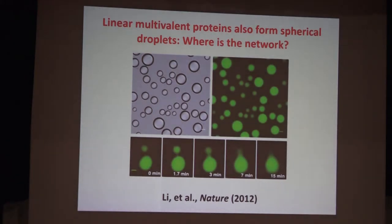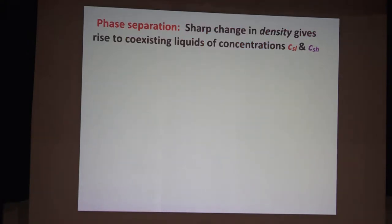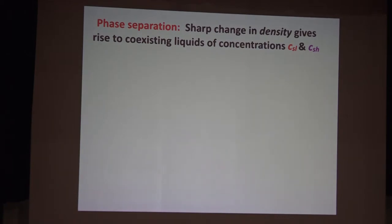The curious observation is that these multivalent proteins don't just form system-spanning networks — they're readily identifiable by the fact that they make spherical droplets. The sphere highlights the fact that there's a finite surface tension. They fuse, they drip, and if you rap them, they recover quite rapidly. The obvious question is: where is the network? It turns out that phase separation, which gives rise to this droplet, is not a network transition in and of itself.